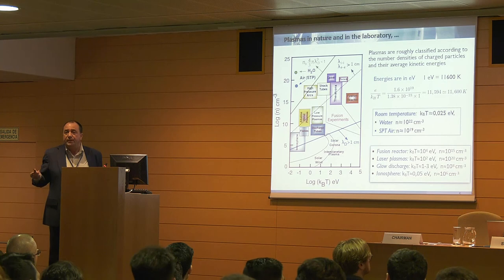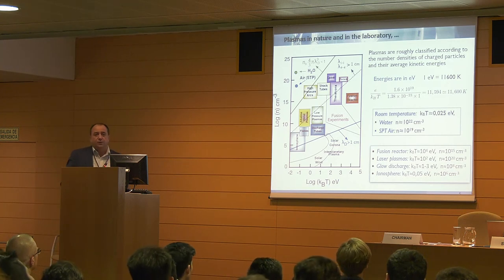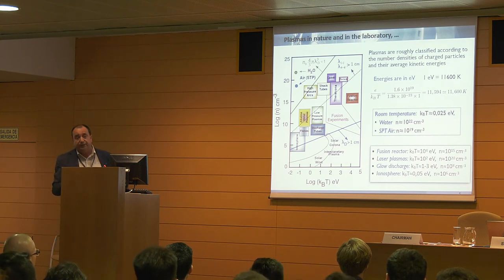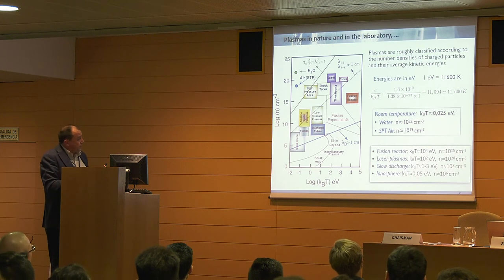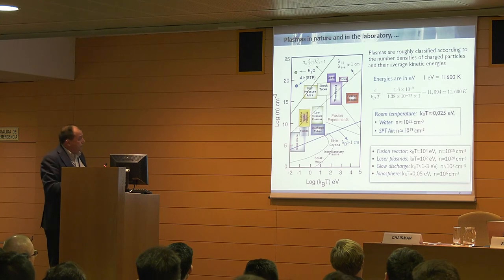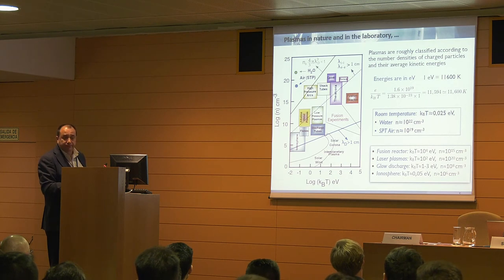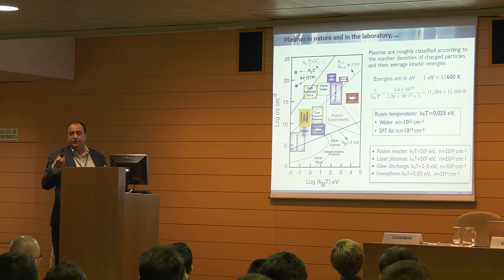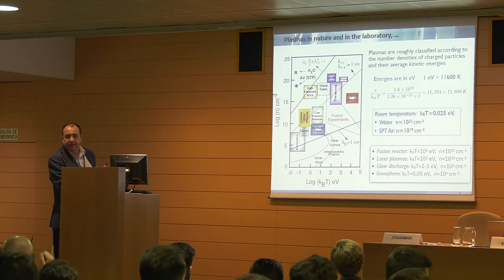Just to tell you how many plasmas we have in nature — a lot. Most matter in nature is in plasma state. This is a very well-known diagram. Here we represent, for example, plasmas in the ionosphere in this corner, and fusion plasmas over there. The expected fusion reaction should work around another point. Not all plasmas in nature and in the laboratory are within this box.